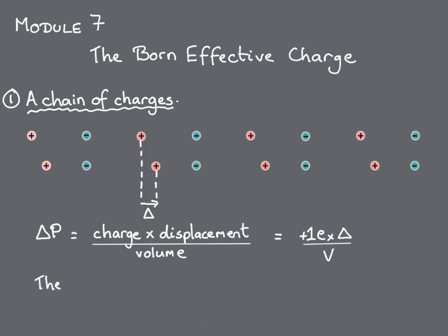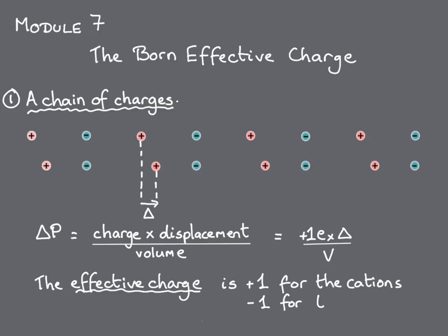In this example, the effective charge of the positive ion, that is the amount that it's contributing to the polarization, is the same as its formal charge, plus one electronic charge. And by the same argument, the effective charge of the negative ion is minus one in units of the electronic charge.